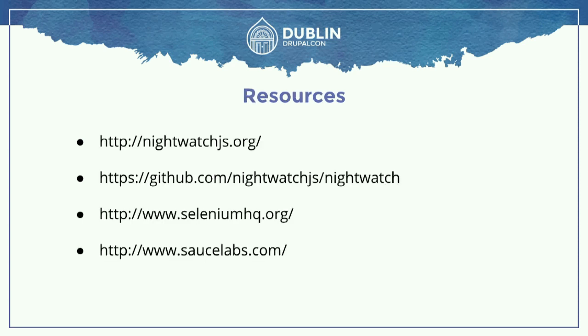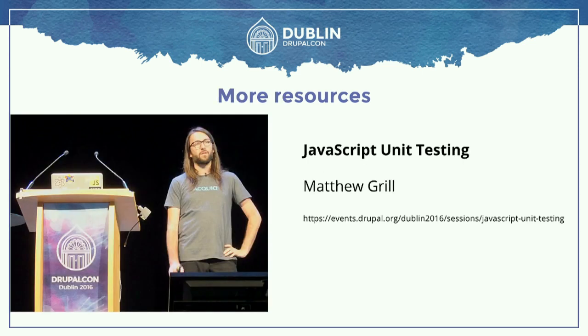Here are some resources: the Nightwatch website has quite a sophisticated API, there's also the Nightwatch GitHub. Check out the Selenium website and the Sauce Labs website. If you want to know more, check out Matthew's session from yesterday on JavaScript unit testing — in Acquia they're using Nightmare, which is an alternative to Nightwatch. He goes deeper into front-end testing and also covers Nightmare, so you can check them out and see which one works better for you.